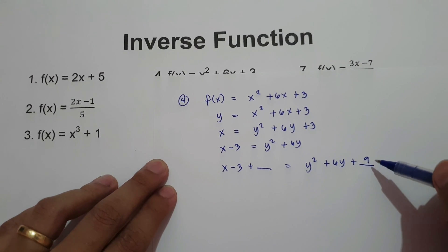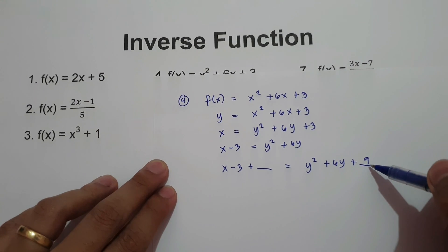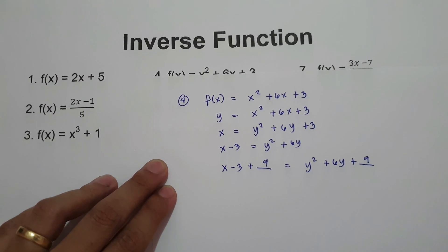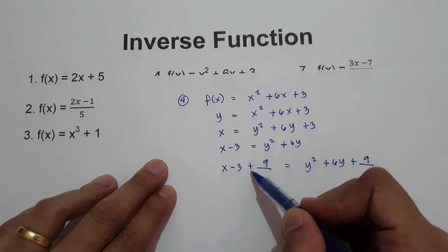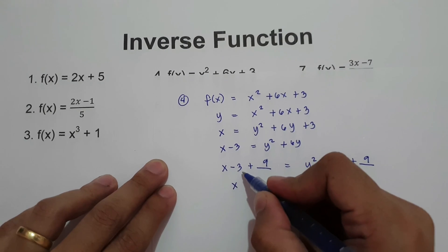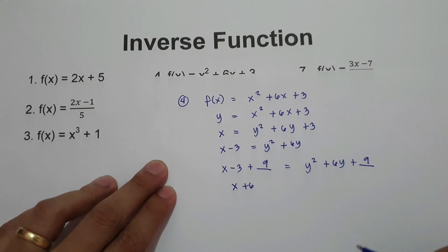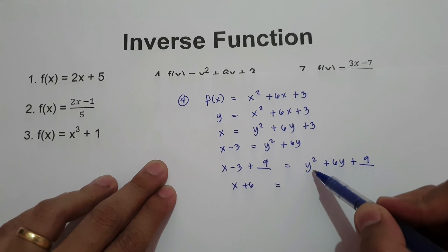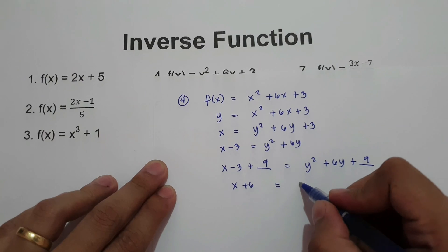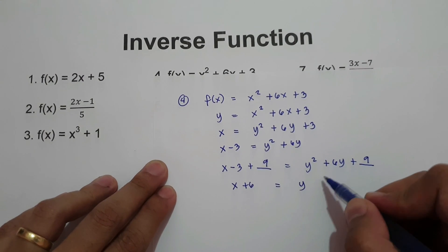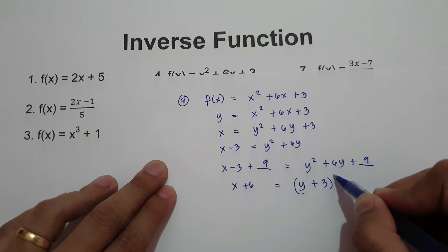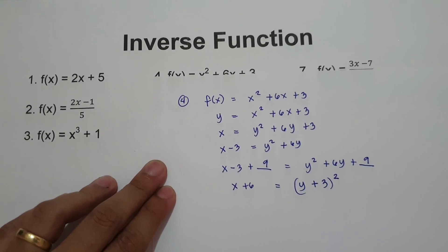We are going to add 9 to make this expression a perfect square trinomial. If we add 9 on the left side, we add 9 on the other side. Then simplify: x minus 3 plus 9 gives x plus 6 on the left. On the right, we factor the expression: square root of y squared is y, the middle term is positive, and square root of 9 is 3, giving us y plus 3, squared.